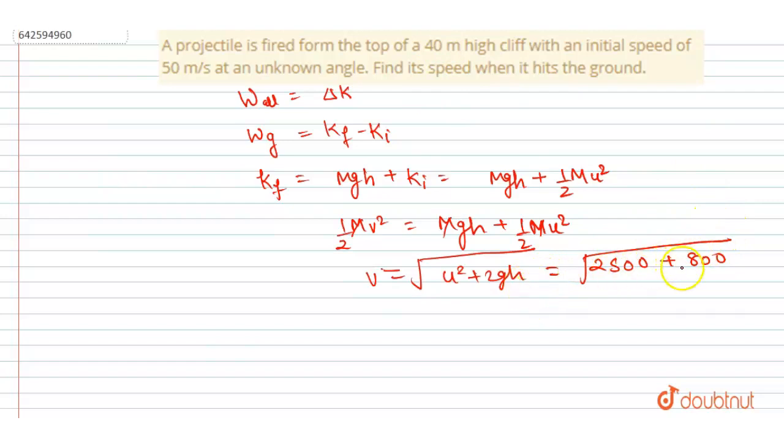40 and g equals 10, so 40 into 10 into 2 will be 800. So it will be 2500 plus 800, and 25 plus 8 is 33. So this will be the speed